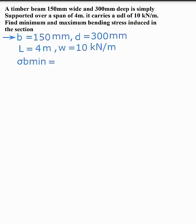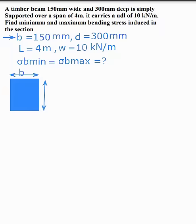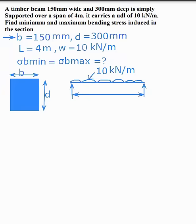We need to calculate sigma B minimum and sigma B maximum. First, draw the section — it is a rectangular section with width B of 150 mm and depth D of 300 mm. The beam is simply supported with a UDL load of intensity 10 kN per m acting on it, and the span of the beam is 4 m.